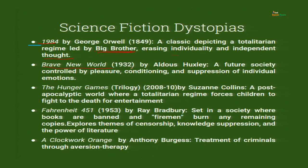Brave New World, 1932 by Aldous Huxley — a future society controlled by pleasure, conditioning, and suppression of individual emotions. In this world that Huxley creates, there is no place for emotions — only logic. Emotions are seen as a weakness, which is very contradictory to what current society believes. Earlier everybody ran after IQ — intelligent quotient. Then it transformed to EQ — emotional quotient. Now everybody looks for EQ in people.